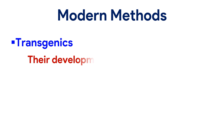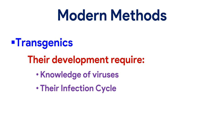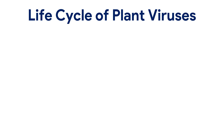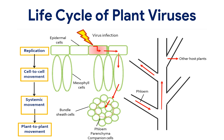Modern methods — Transgenics: their development requires knowledge of viruses, their infection cycle, and strategies of transgenic development. In the viral life cycle, for the virus to reproduce and establish infection, it must enter cells of the host organism and use those cells' materials. Proteins on the surface of the virus interact with proteins of the cell. Attachment or adsorption occurs between the viral particle and the host cell membrane. A hole forms in the cell membrane, then the virus particle or its genetic contents are released into the host cell where viral reproduction may commence.